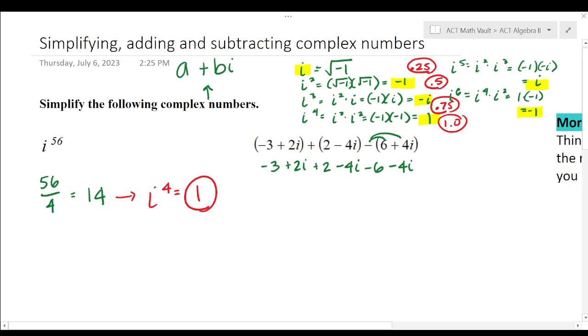So the negative three, the two and the six, if I add those together. Negative three plus two is negative one plus six or minus six is negative seven. So negative seven and then two i minus four i is negative two i minus four i is negative six i. So there we have an answer and it's in the a plus bi format. So we're good.